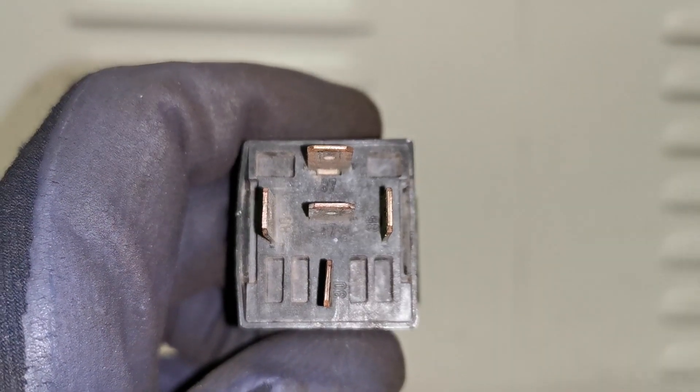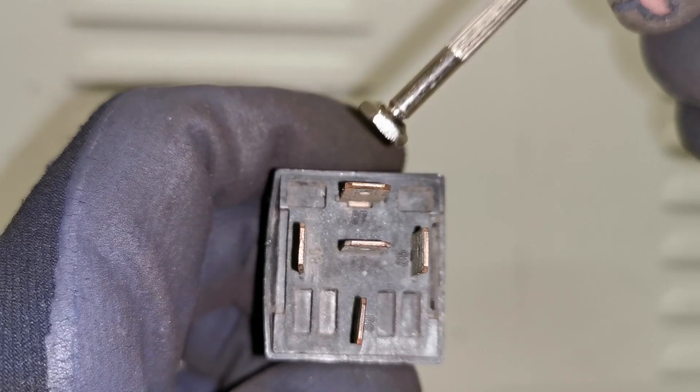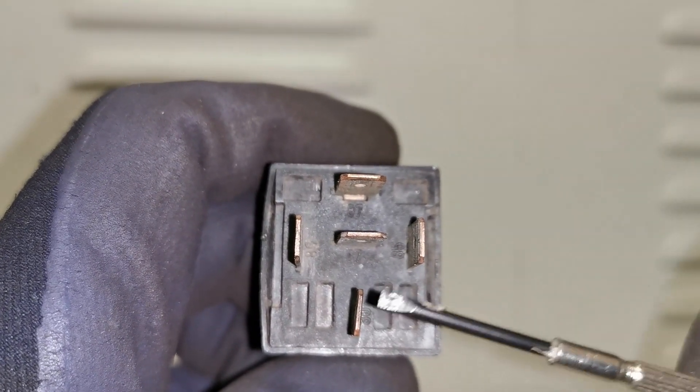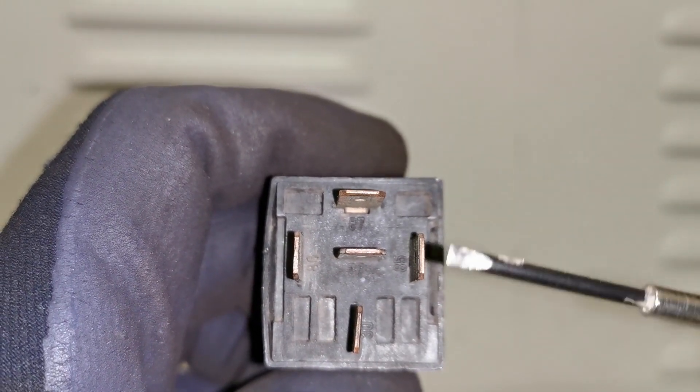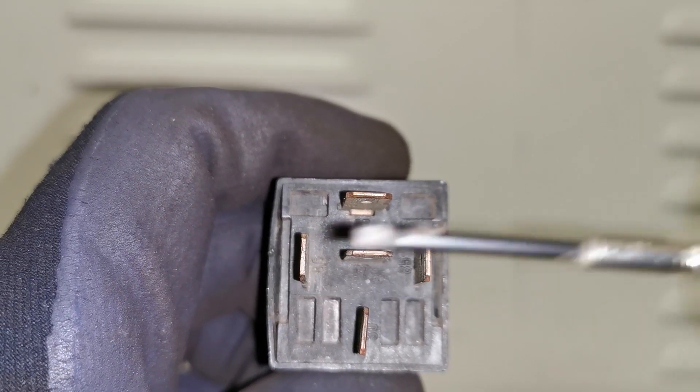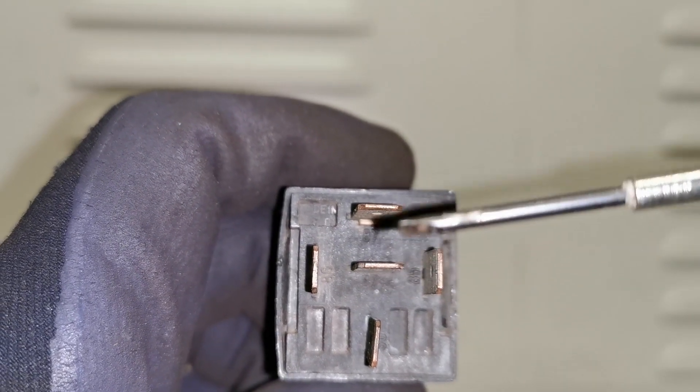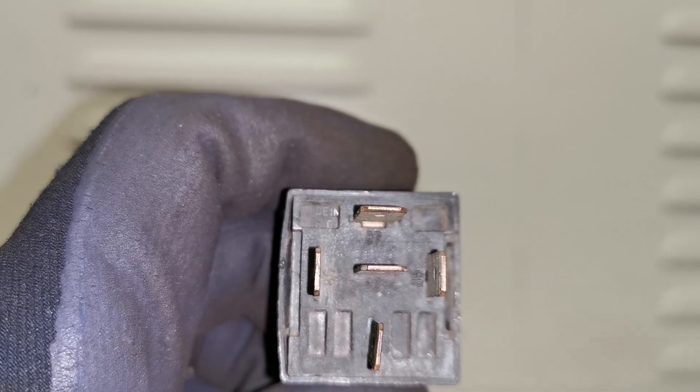So if I zoom in on this you can see that 87 is up the top side, number 30 is on the lower side. We have 85 and 86 across from one another and this is the secondary 87 one here.